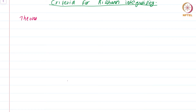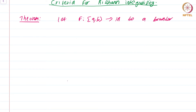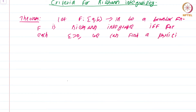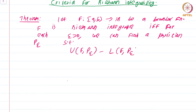Theorem: let f from [a,b] to ℝ be a bounded function. f is Riemann integrable if and only if for each epsilon greater than 0, we can find a partition P_epsilon such that U(f, P_epsilon) minus L(f, P_epsilon) is less than epsilon.